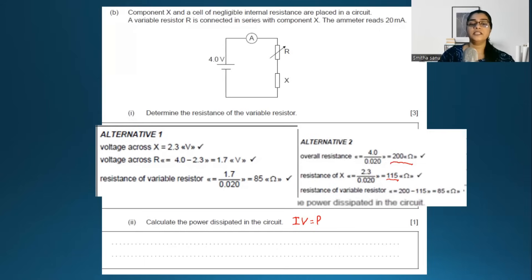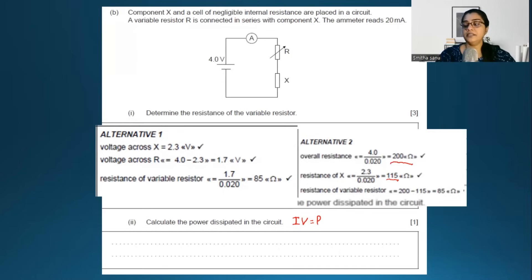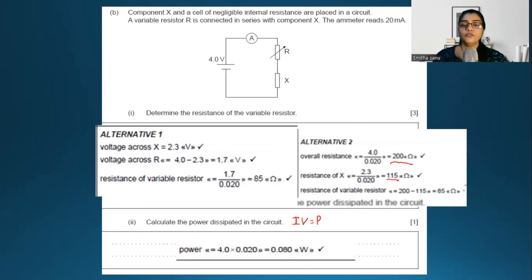Next is the concept of power. Power equals voltage times current. The voltage is 4 volts and current is 20 mA, so we can calculate the power dissipated.